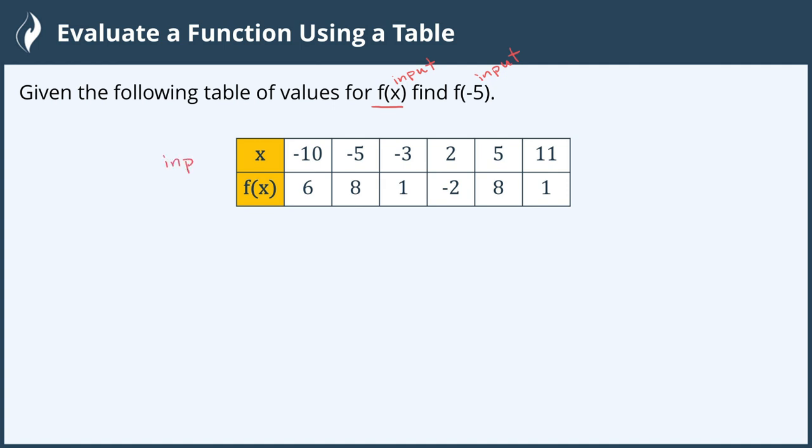So we'll go to our input variable and find negative 5. As we move over, here's negative 5, and using this table it maps to the output, f of x or y, which would be 8.